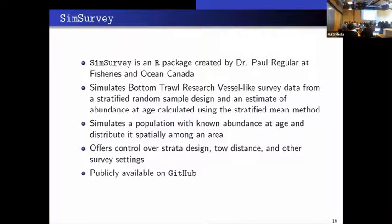So for my simulation study, I used an R package that was created by Dr. Paul Regular at Fisheries and Oceans Canada. So what it is, it's a package where you can simulate bottom trawl research vessel like survey data from a stratified random sample design and estimate the abundance at age calculated using the stratified mean method. So what it does is you create a population, like with, I made mine cod-like. And so you use like a growth function. You define the growth function. You define some other characteristics of the population. It gets distributed across space. And then you can design surveys and test surveys. And perform surveys that way. And it's publicly available on GitHub if anyone's interested.